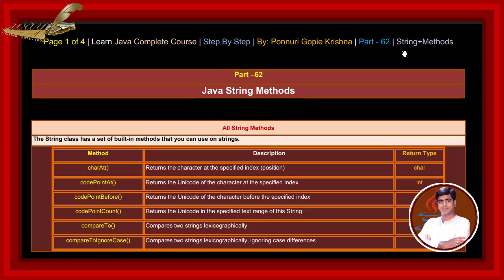compareTo method compares two strings lexicographically. compareToIgnoreCase compares two strings lexicographically ignoring case differences.